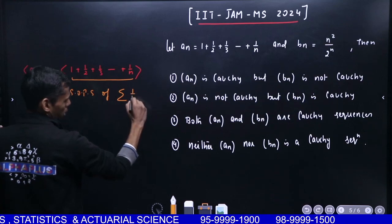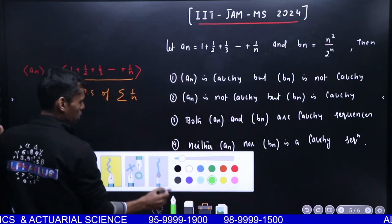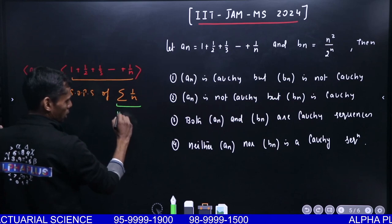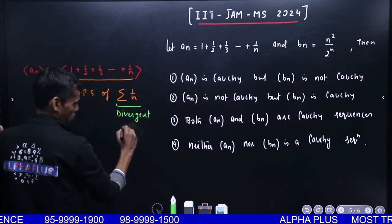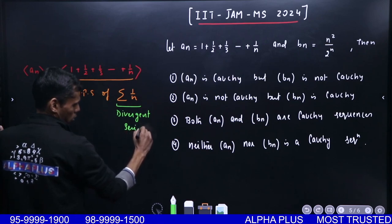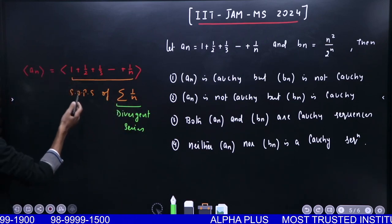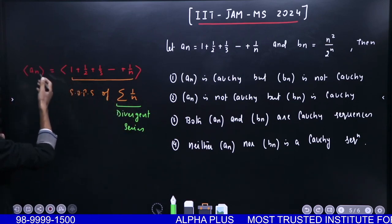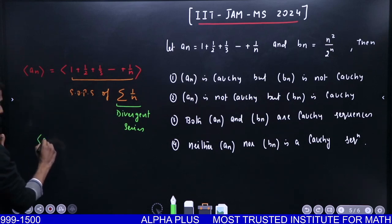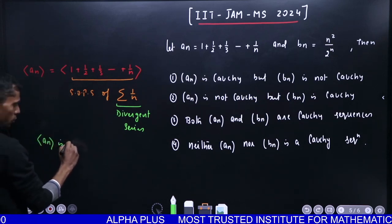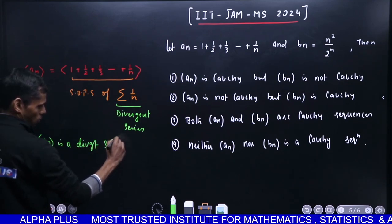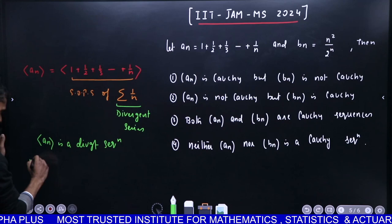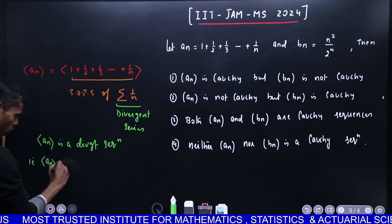Summation 1/n is divergent. This is a divergent series. So if the series is divergent, then its SOPS will also diverge. Therefore AN diverges. That means sequence AN is a divergent sequence. That is, sequence AN is not Cauchy.